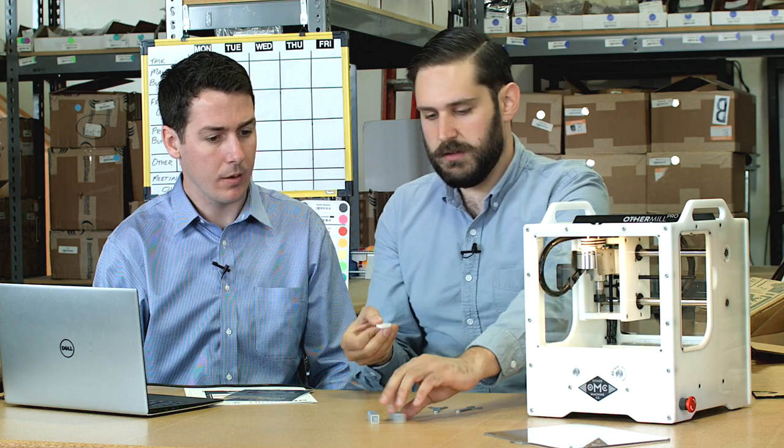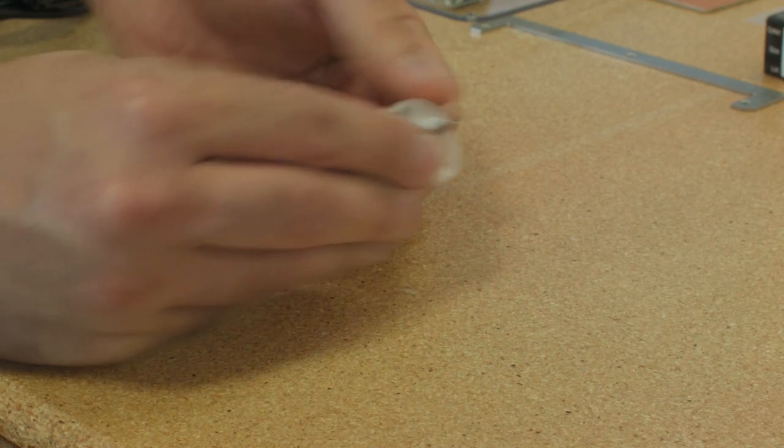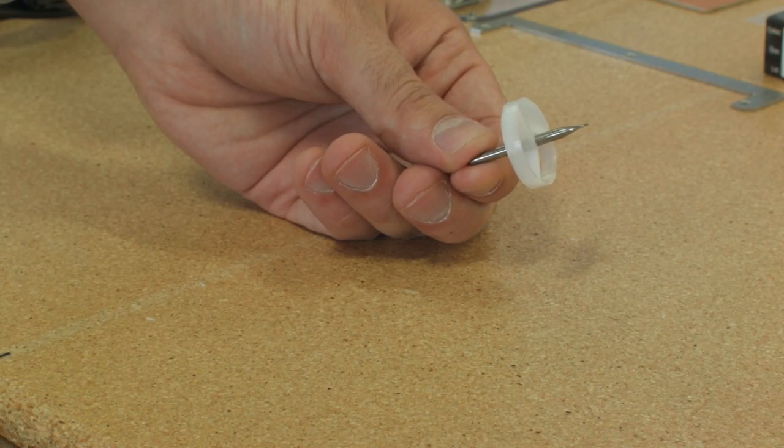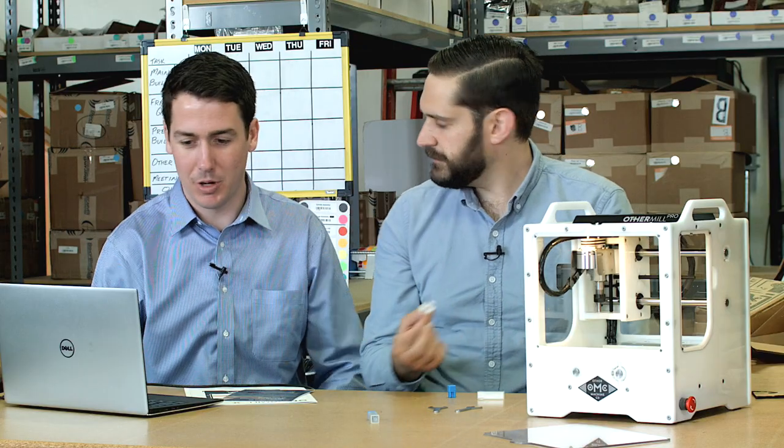So today we're going to be milling a bit fan. This is a small fan that can go on the end of a milling tool like one of these. What it does is it blows all the chips out of the way, helps improve tool life and lets you mill a little bit faster. And it was designed in Fusion 360.